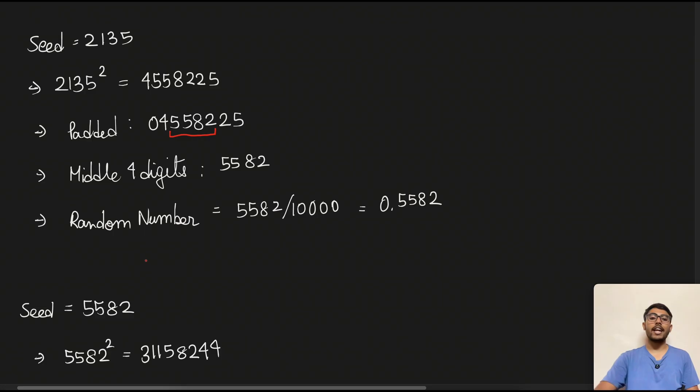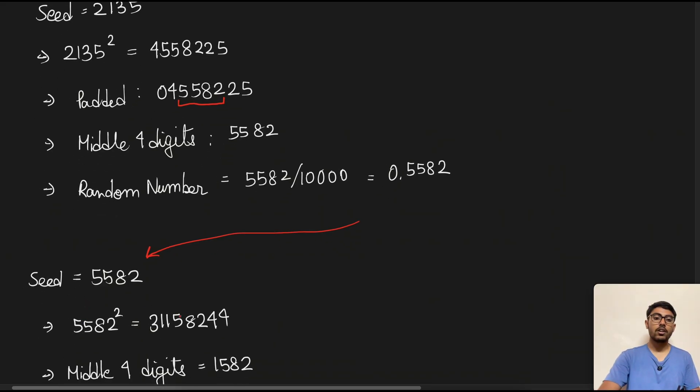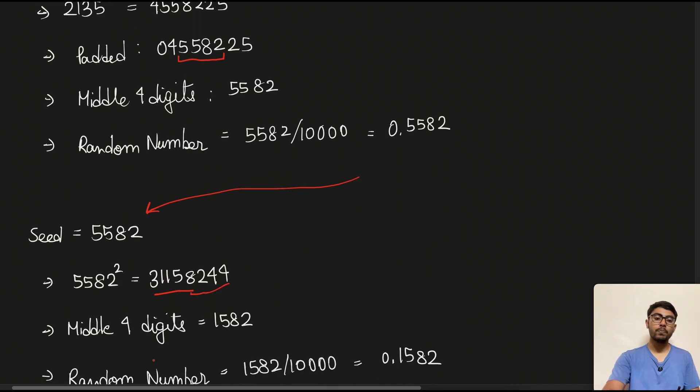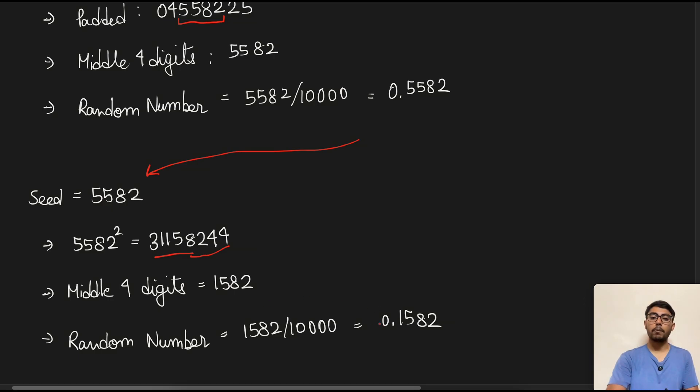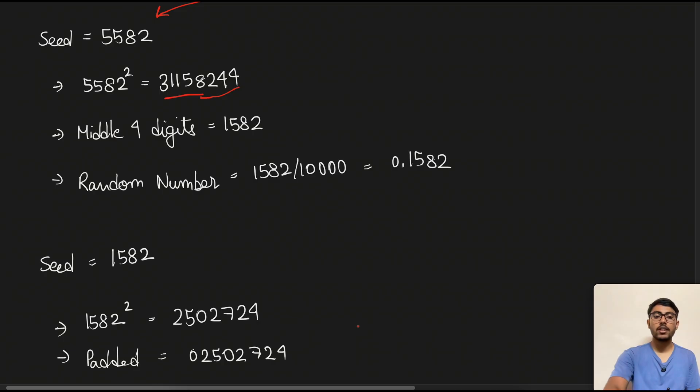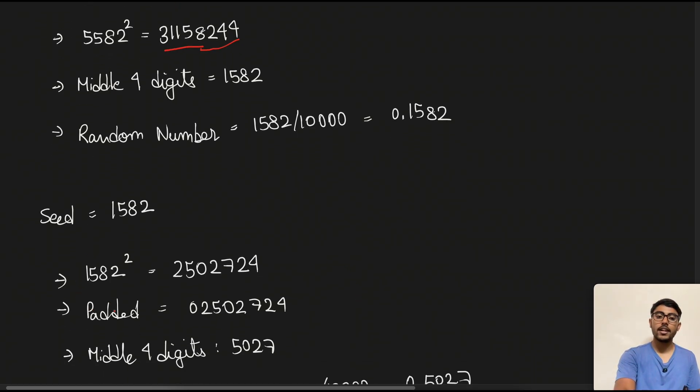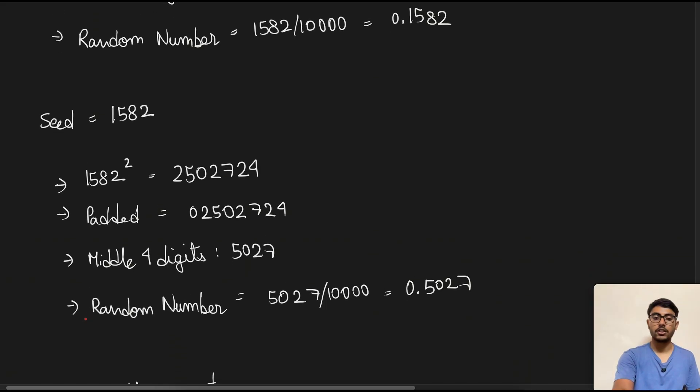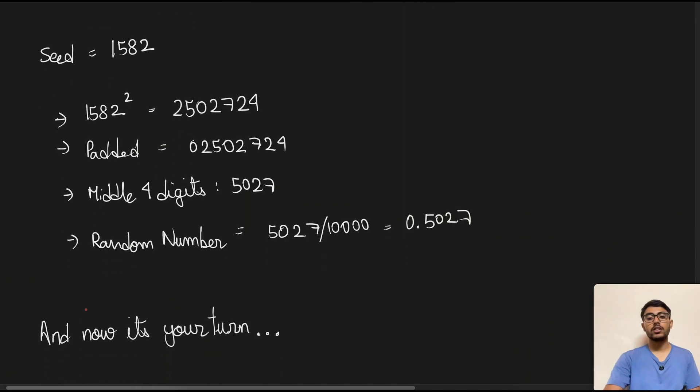Now for the next iteration, the seed is 5582 from here. Then we square it off again, this time we get eight digits in total. So we don't need to do any padding, we just take the middle digits which is 1582, then we do the random number thing again and we get 0.1582. This is the second random number. The third one is again the same procedure: the seed is this one, the squaring, the padding, and middle four digits, and random number generation. And now it's your turn to basically repeat this process and do the rest of the seven.